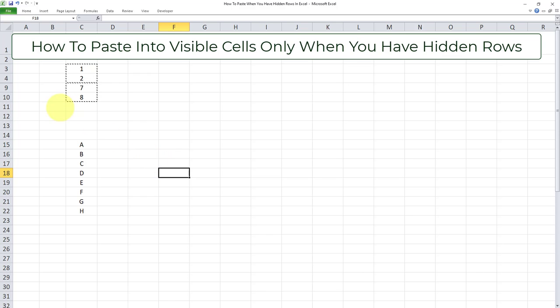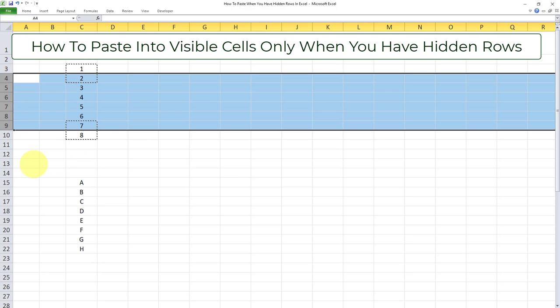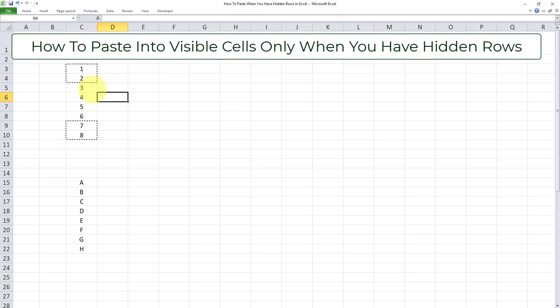Now in order to do that we have to use the skip blanks function in Excel. And I'll explain that to you in a moment. First I want to make sure that this range indeed does contain data. So what I want to do is I want to copy from this range over here into the range above it.